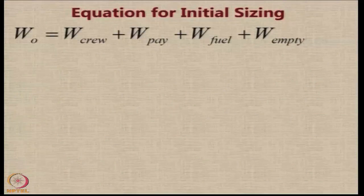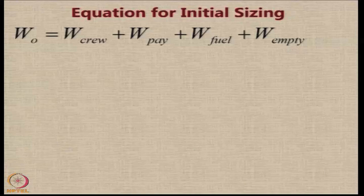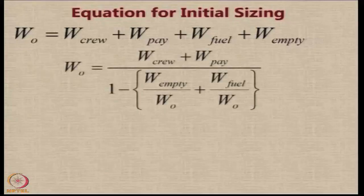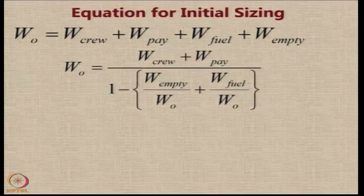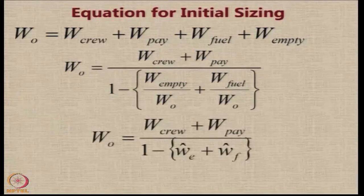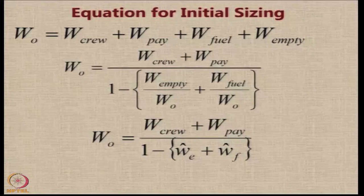Since crew and payload are the knowns and the other two are unknowns, we let the known values remain in the numerator and bring the unknown values into the denominator. The equation can be converted into: W zero equals the known values in the numerator divided by 1 minus two ratios — W empty by W zero and W fuel by W zero. We also call them the empty weight fraction W-e-bar and the fuel weight fraction W-f-bar.